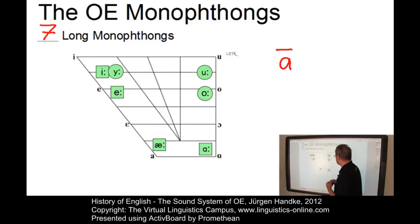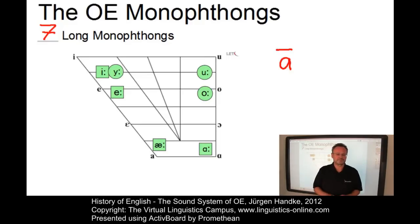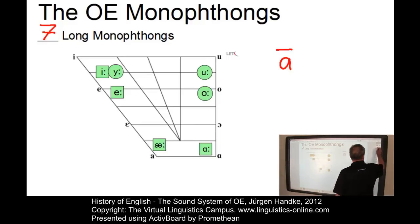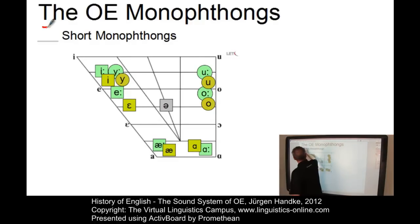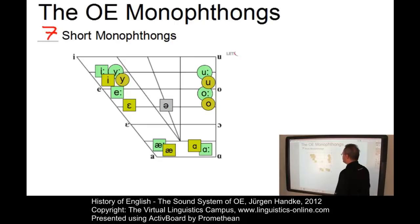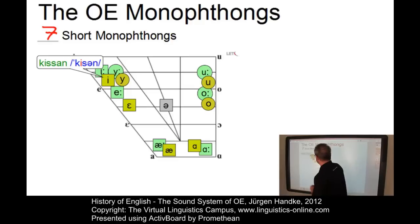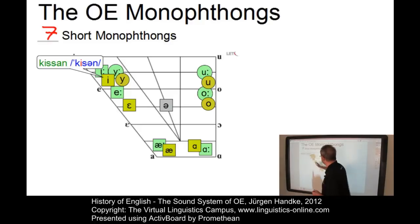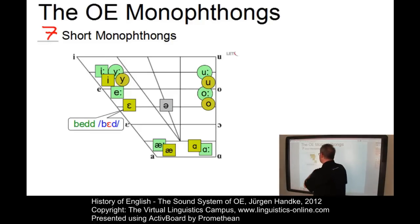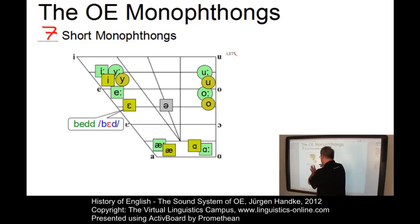The pattern of the long monophthongs in Old English is a highly congruent pattern. Let us now add the short monophthongs — there are seven short ones too. Each long monophthong had a short counterpart. Here is the first: 'cyssan', a short high front vowel I, as in present-day English 'kiss'. A short Æ, slightly lower, as in 'bed' — a mid-high front vowel approaching the mid position.